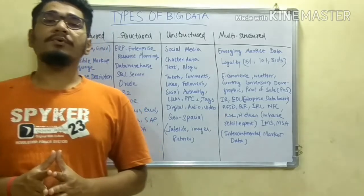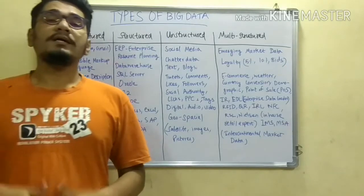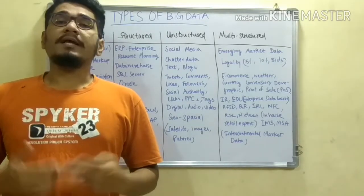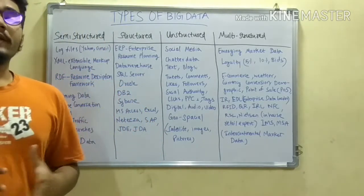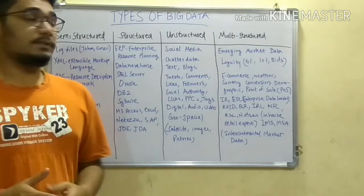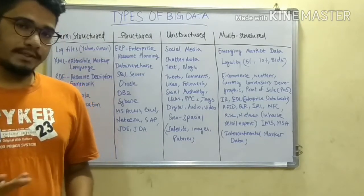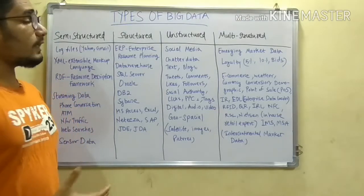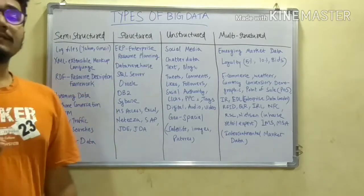Today I am going to teach you about the types of big data. The earlier video was about the three V's of big data — velocity, volume, and variety. Today we will be talking about the four main types of big data: semi-structured data, structured data, unstructured data, and multi-structured data.